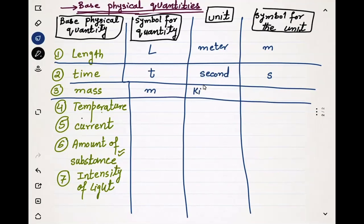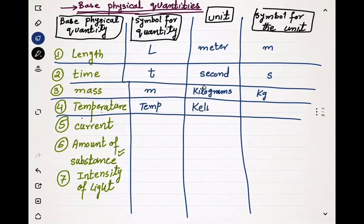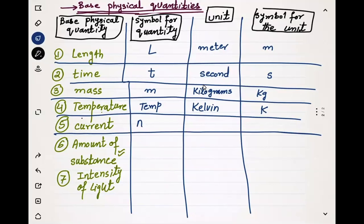The third quantity is mass, represented by smaller m. Its unit is kilograms and the symbol for the unit is kg. The fourth quantity is temperature. Its unit is Kelvin, which is the absolute temperature, and it is represented by K. The next quantity is current. The symbol for current is I, the unit is ampere, and the symbol for ampere is A.